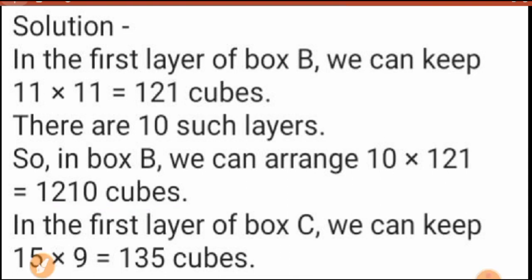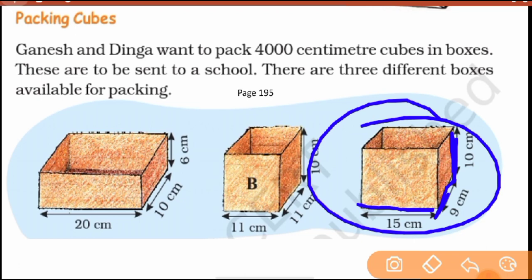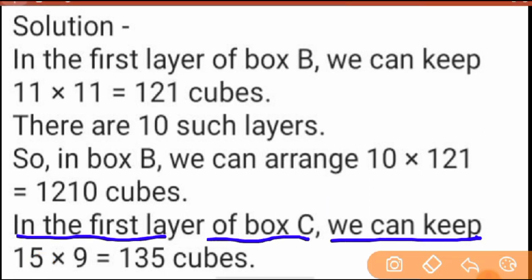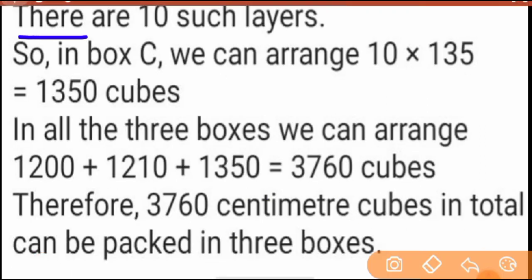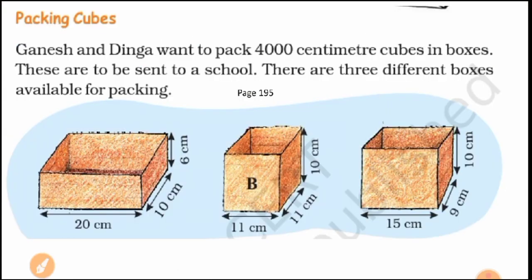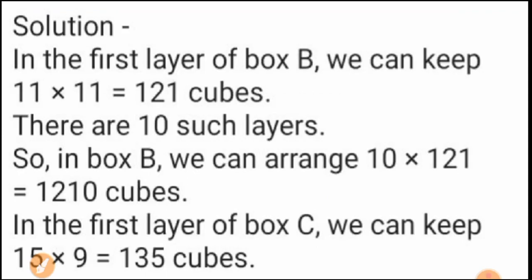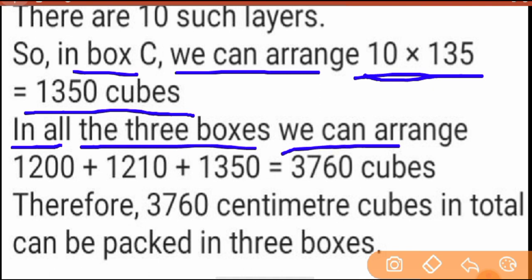For Box C: length is 15, width is 9, height is 10, so there are 10 layers. First layer: 15×9 = 135 cubes. With 10 such layers: 10×135 = 1350 cubes can be arranged in Box C.